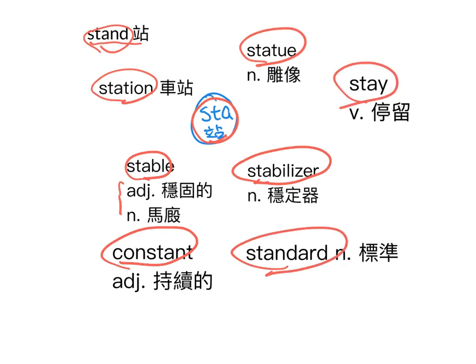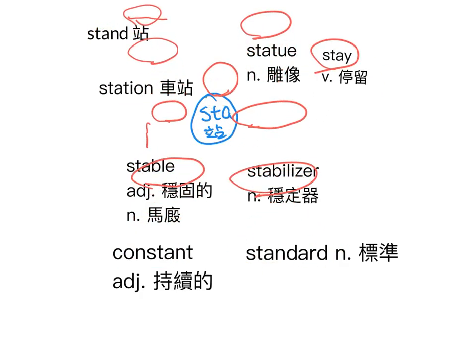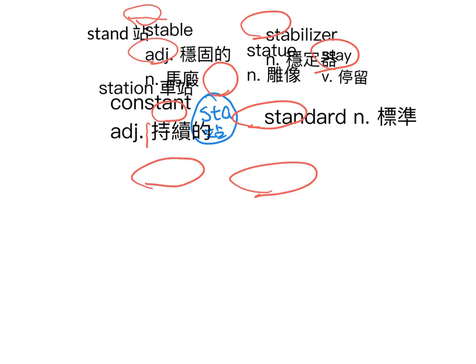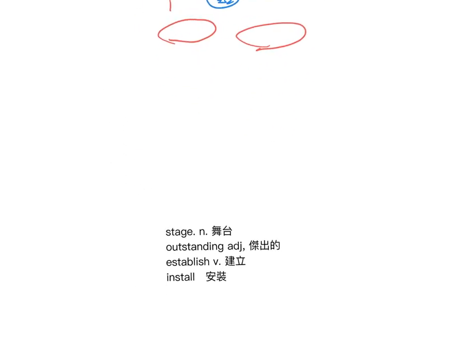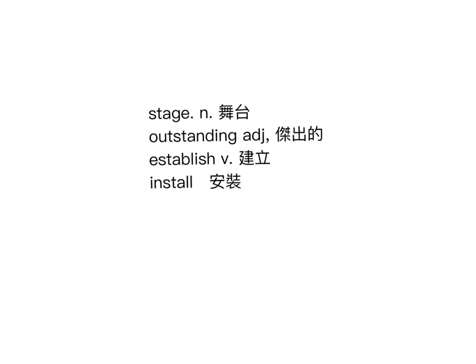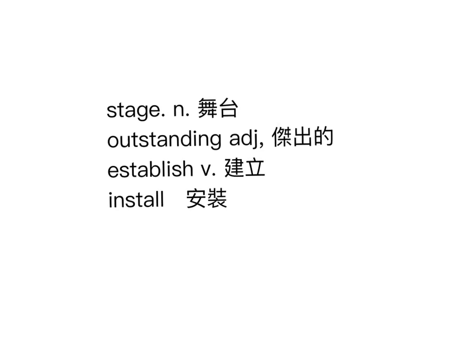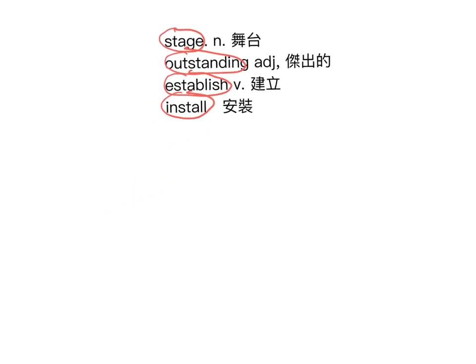来这几个字再度复习一下：stand、station、stable（有两种解释）、constant、statue、stabilizer、standard、state、stage、outstanding、establish、install。install进入站的状态，的确有点牵强，你就看要怎么记会比较容易。